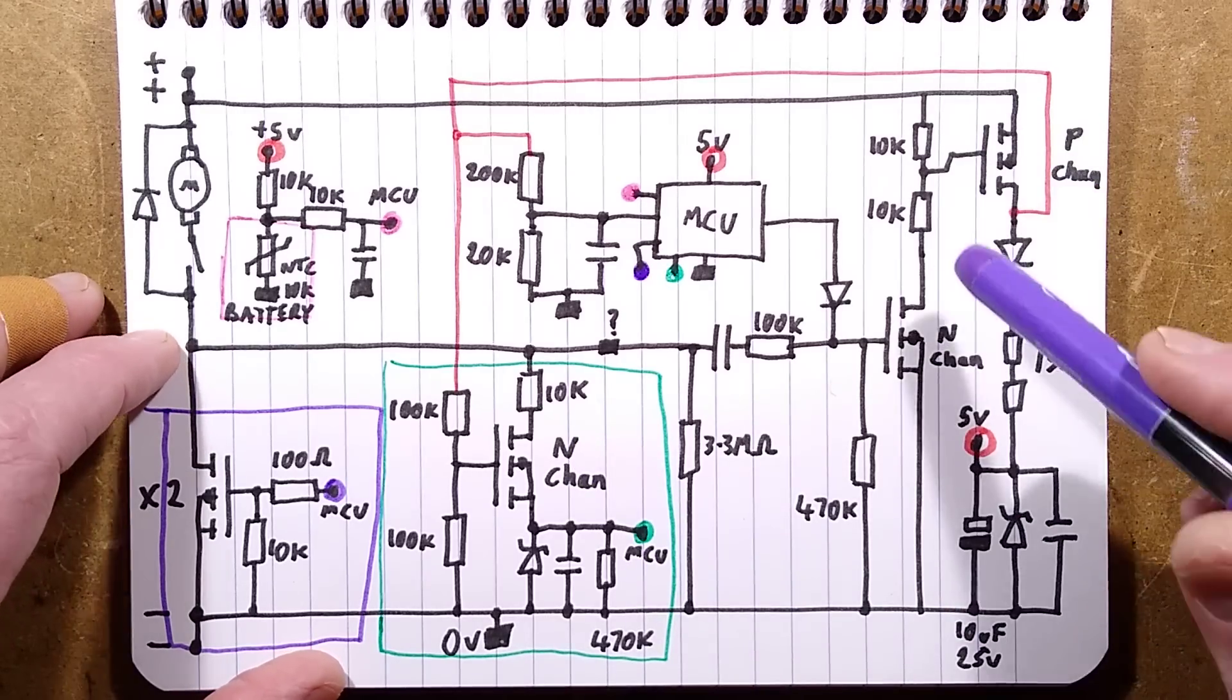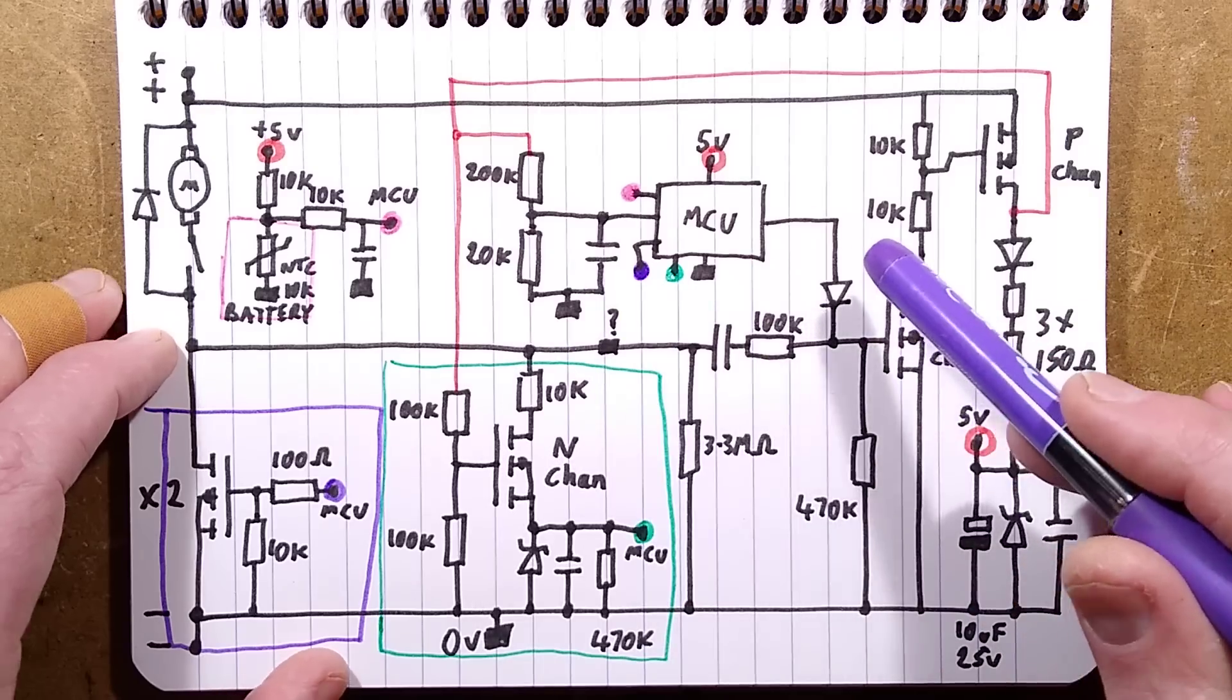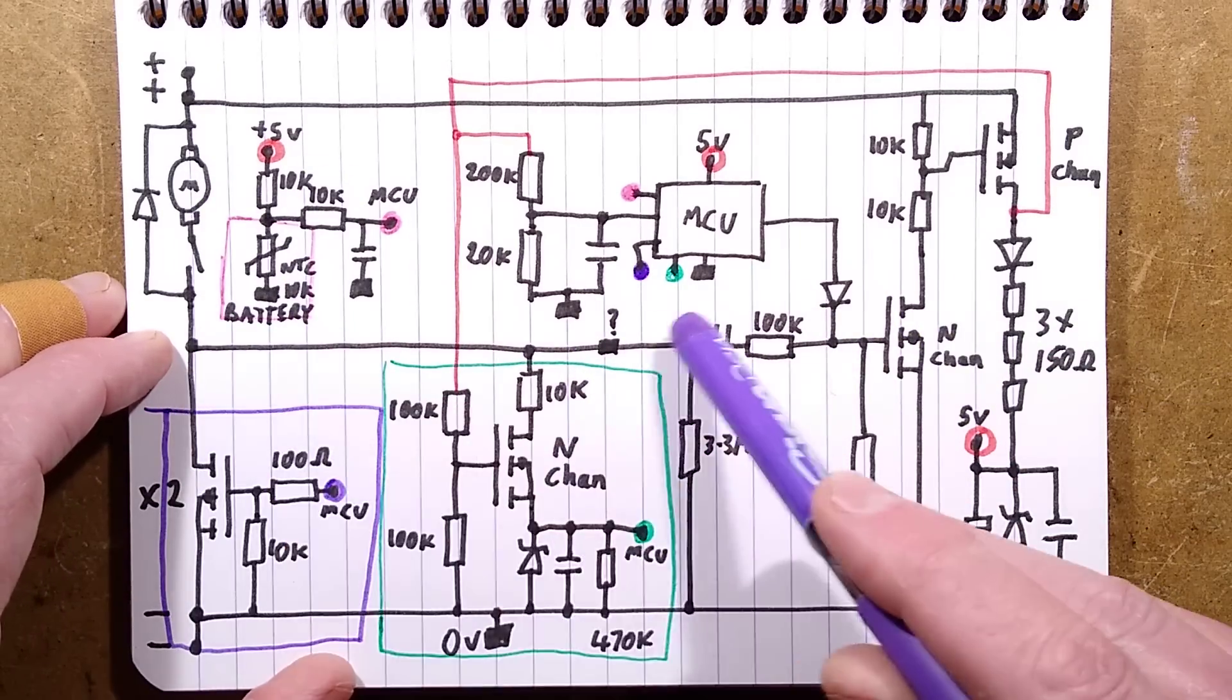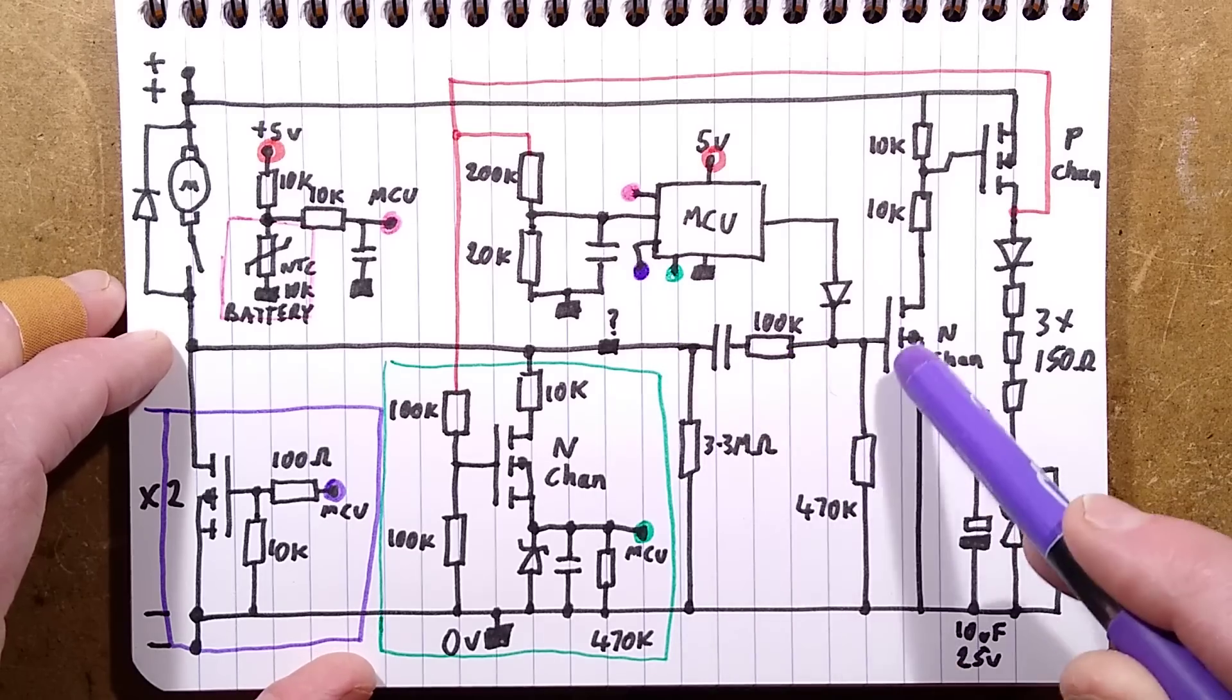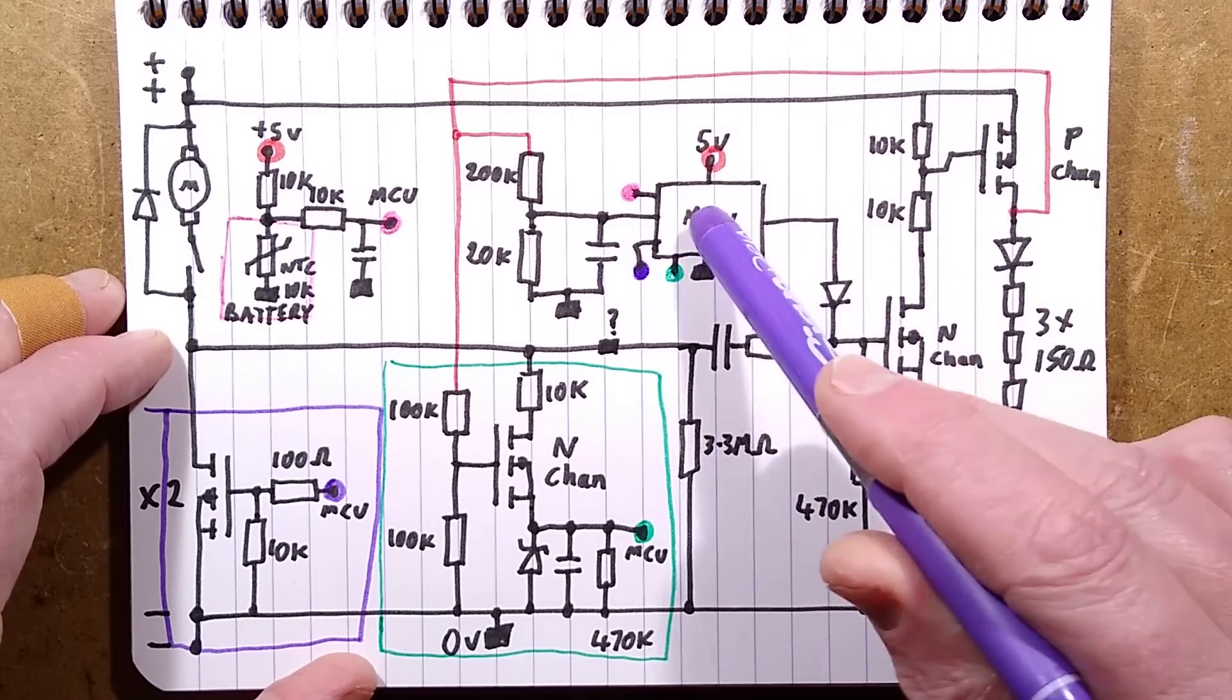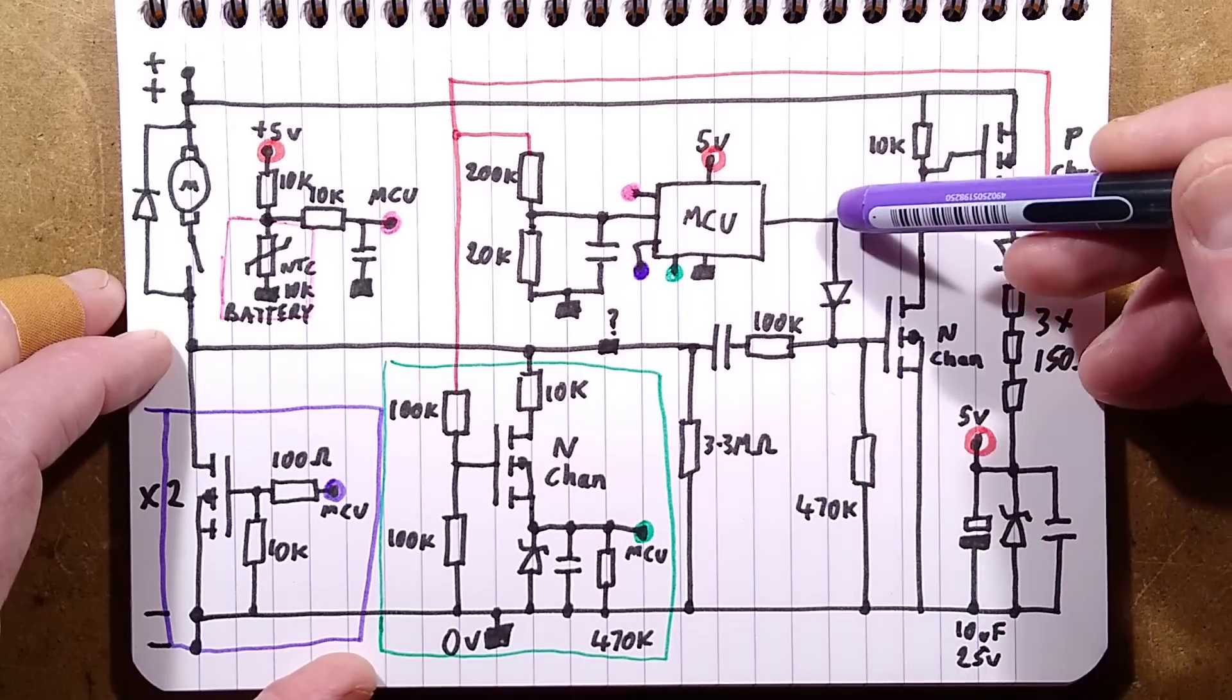The sequence of operation here is that when you do press the trigger, the power is coupled via this capacitor, turns this transistor on, this one on, gives it the five volt supply.